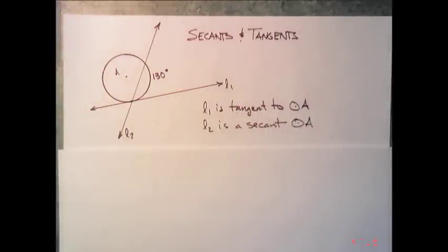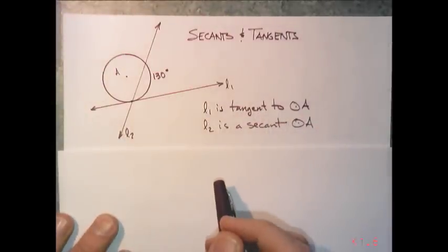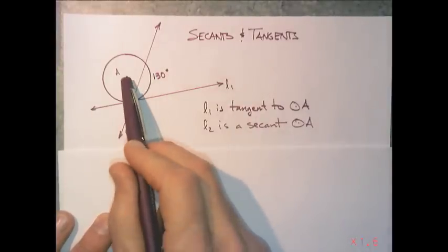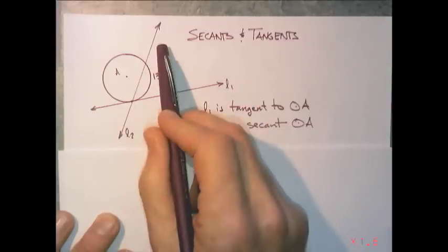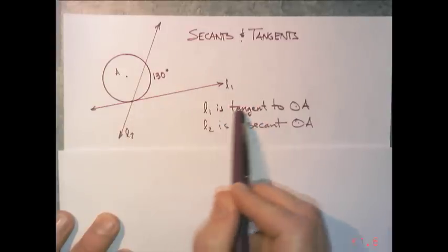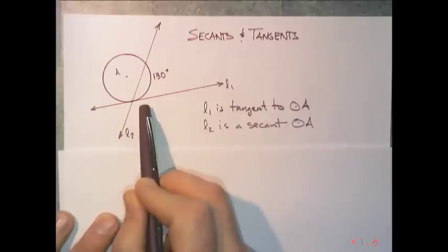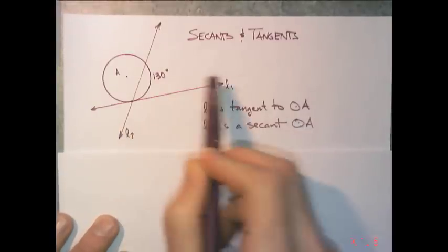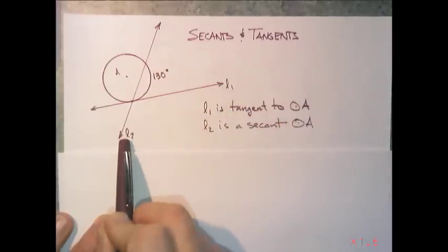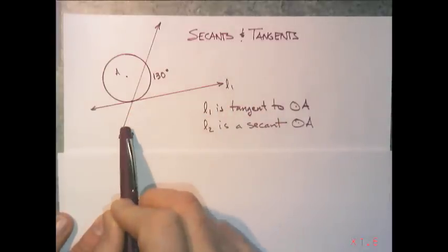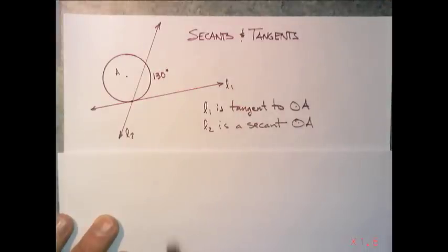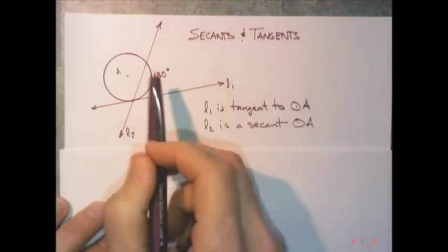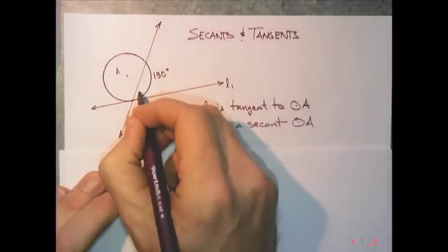This video is on secants and tangents. We're given circle A with two lines: l1 and l2. l1 is tangent to circle A, meaning it intersects at one point. l2 is a secant to circle A. The word secant means that it's a line that intersects a circle twice, so a line that goes through a circle. We have two lines that intersect.